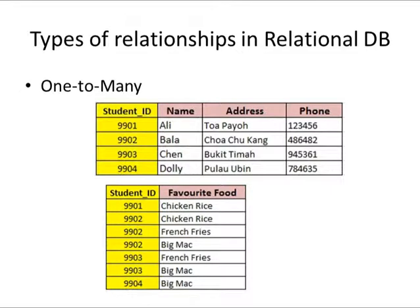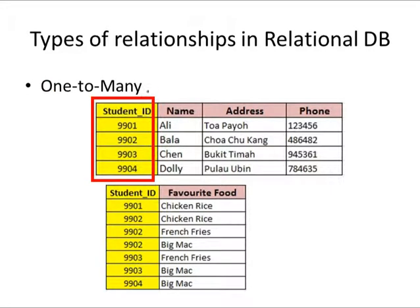Another example is the one-to-many relational database. Here, we have a database consisting of two tables, and the two tables share a common key — in this case, the student ID. The common key between the two tables links them together so that the tables can be referenced between the primary and child tables. In this normalized one-to-many relational database, there is no duplication or minimized duplication of information.